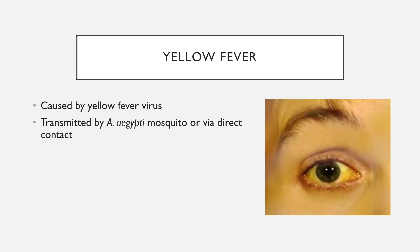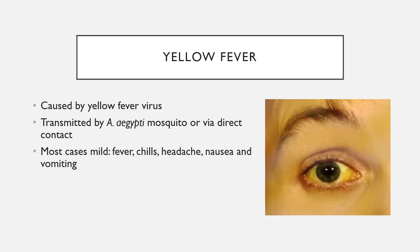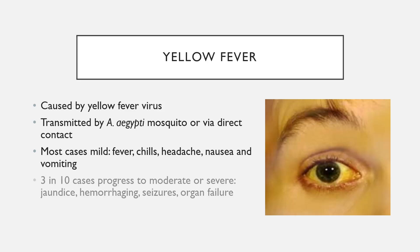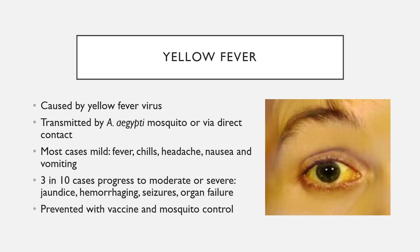Yellow fever is caused by the yellow fever virus and is also transmitted by the Aedes aegypti mosquito, as well as through direct contact with an infected individual. Most cases are mild — fever, chills, headache, nausea, and vomiting — but 3 in 10 cases progress to moderate, severe, or malignant yellow fever. These are associated with jaundice (the namesake of the disease, causing yellowing of skin and mucous membranes), hemorrhaging, seizures, and organ failure; half of cases that progress to this stage end in death. It is preventable with a vaccine and mosquito control.